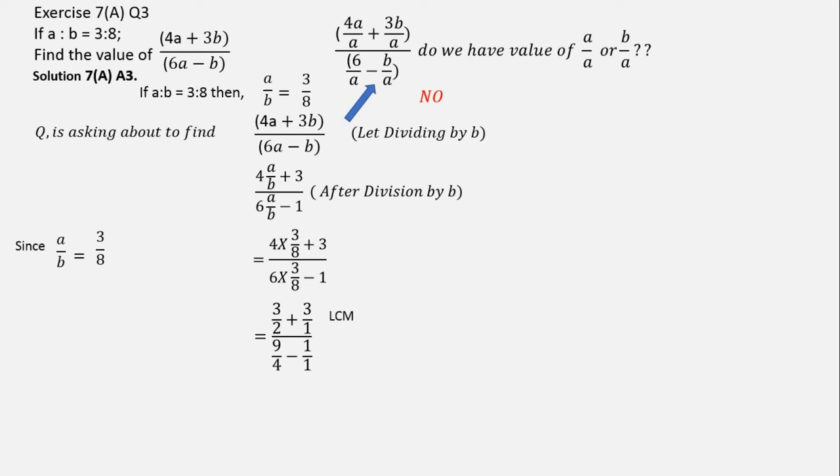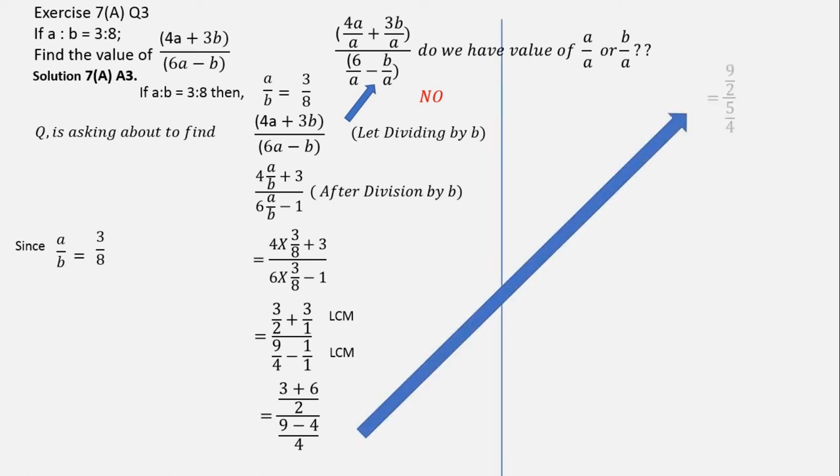This now is going to be very simple. You just need to do the LCM of both the values and you will be getting 3 plus 6 by 2 oblique 9 minus 4 by 4. If we solve this further, we will be getting 9 by 2 oblique 5 by 4.